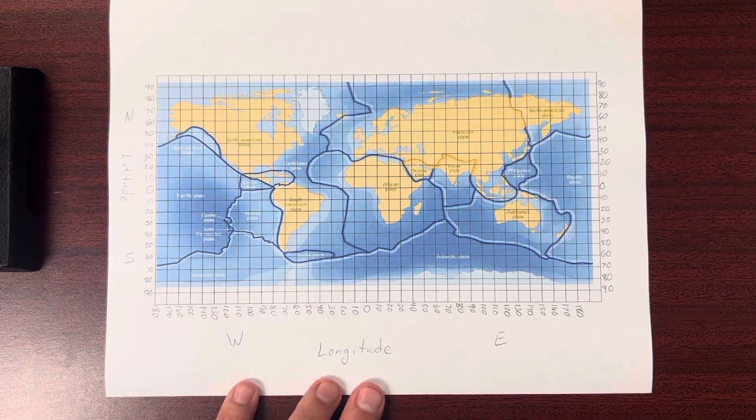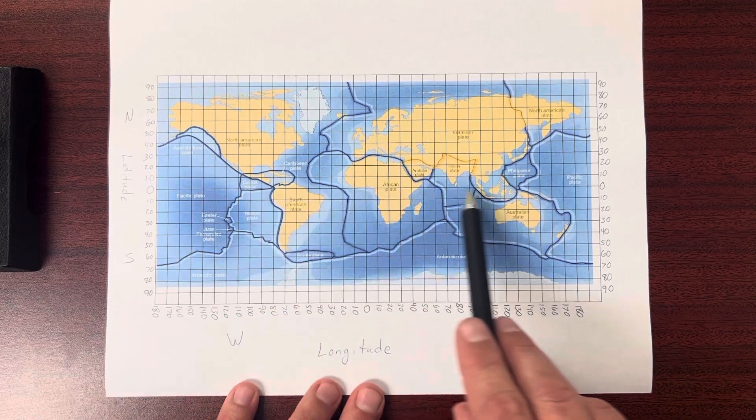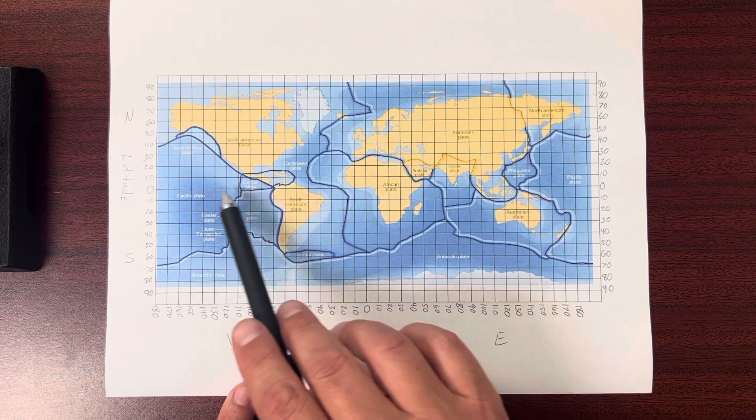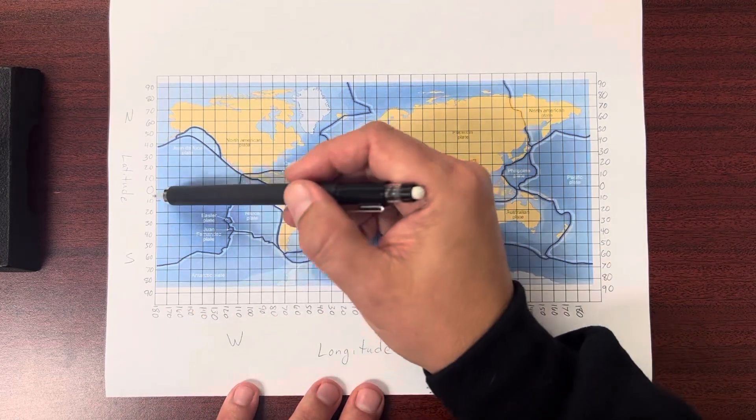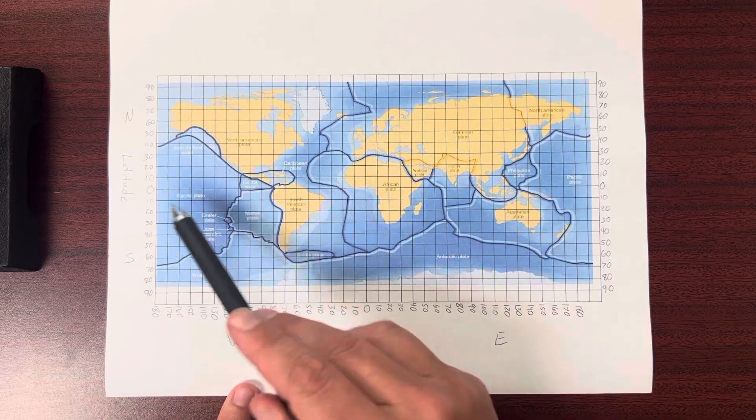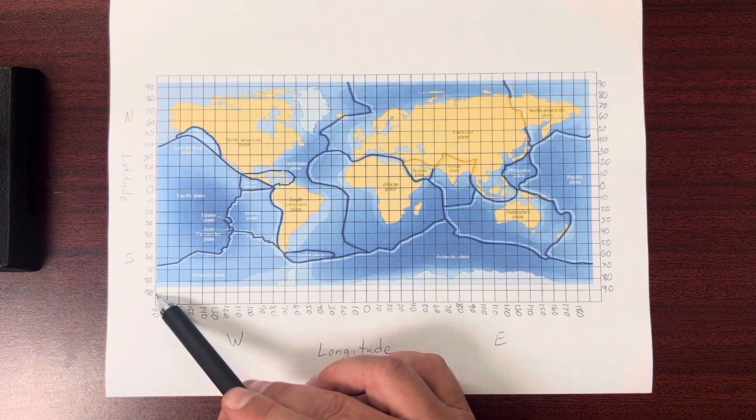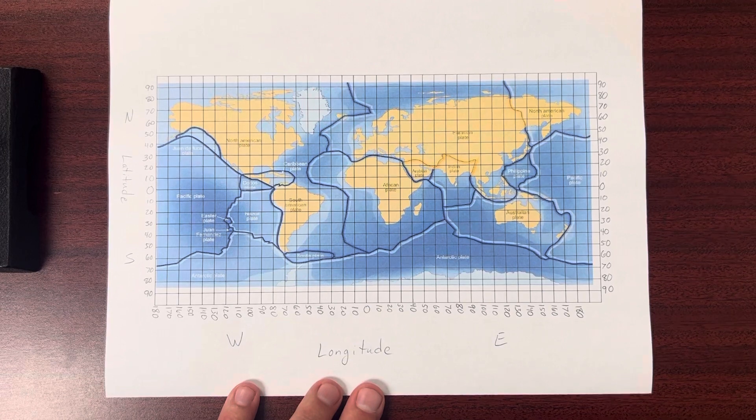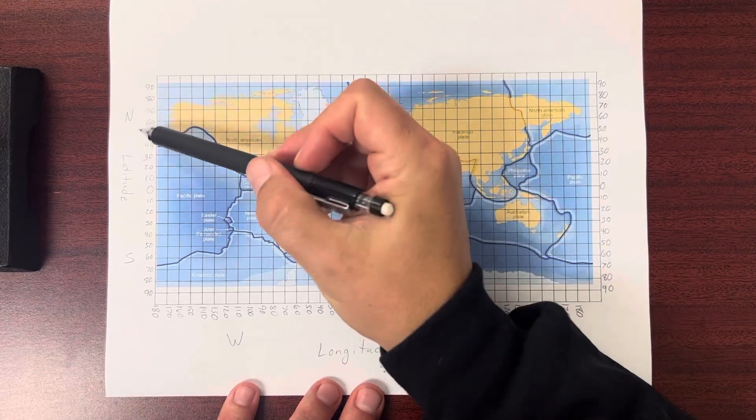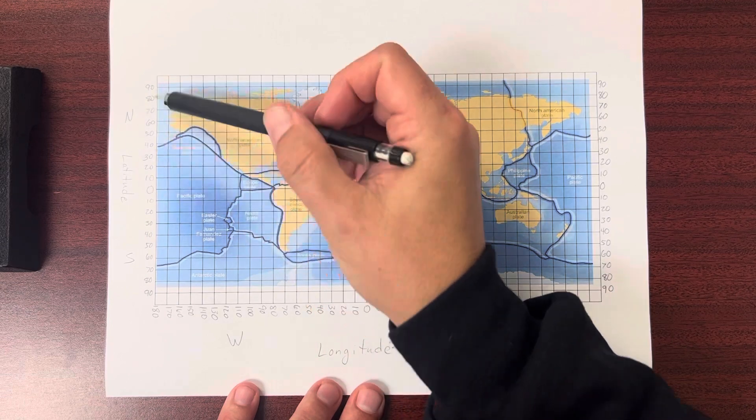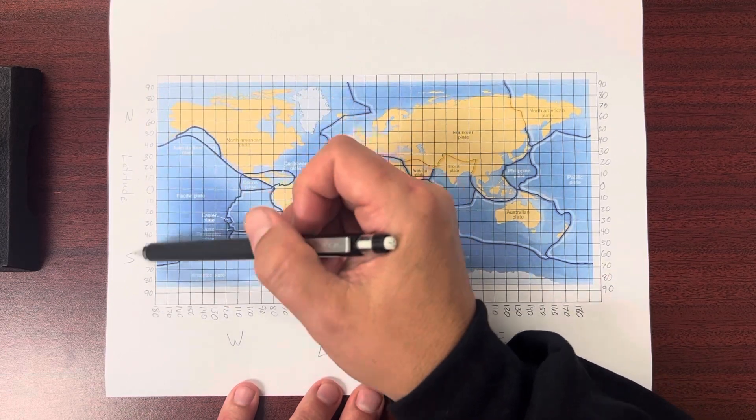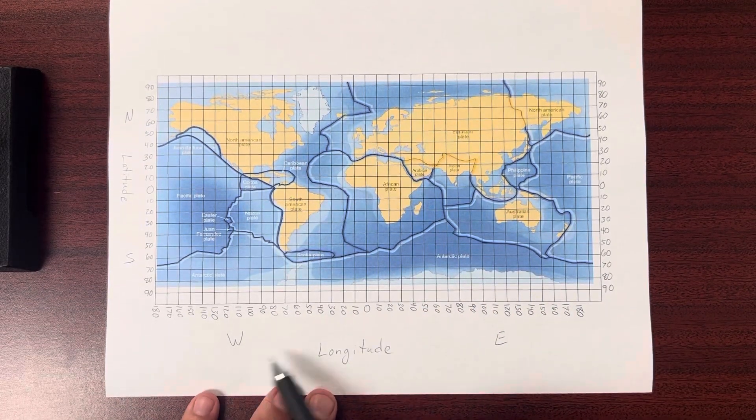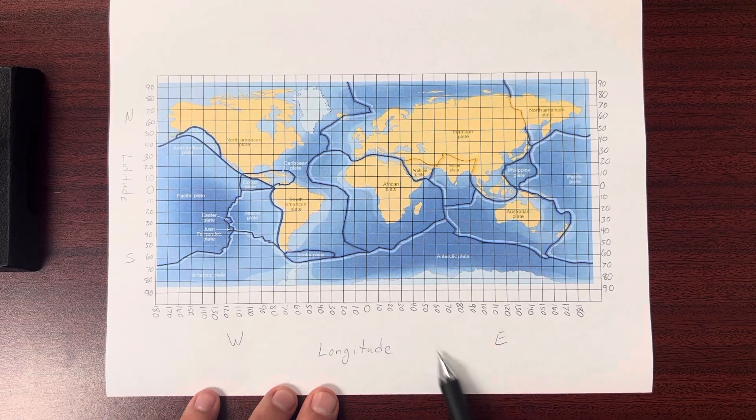And then our latitude. The 0 degree latitude, or the equator, goes through the top part of South America right here. And then we go up by 10s, up to 90 at the top, and then by 10s down to 90 towards the bottom. So you're going to copy this just like I have it. You'll also want to mark north. This area is north latitude. This area is south latitude. This side of the 0 is west longitude. This side of the 0 is east longitude.